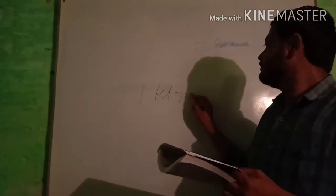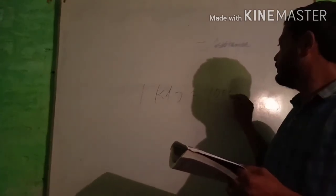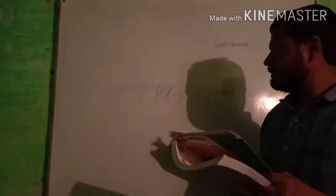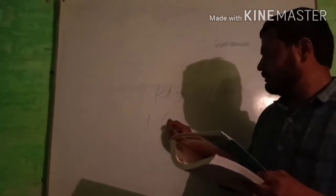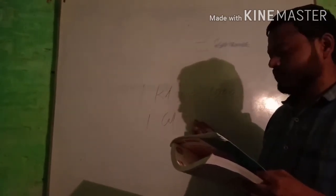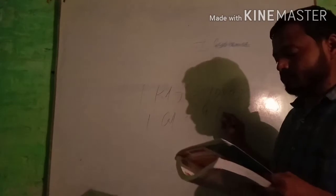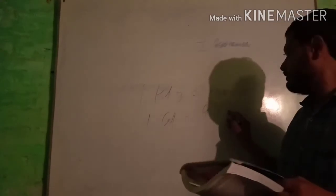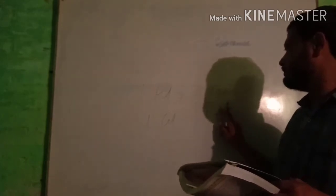बच्चों, one kilojoule equal क्या है - one thousand joule. उसके बाद एक calorie equal होता है four point two joule. इसको हम होल नम्बर में राइट करते हैं - 4.2 joule.